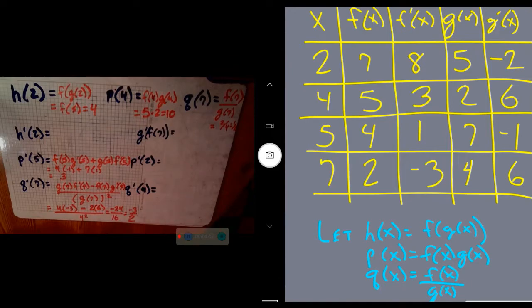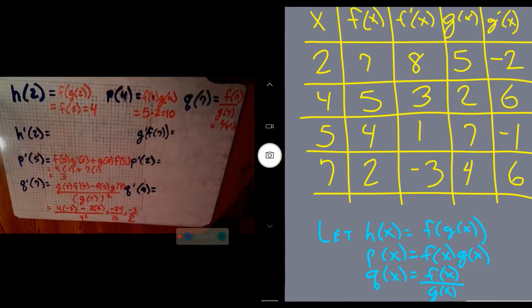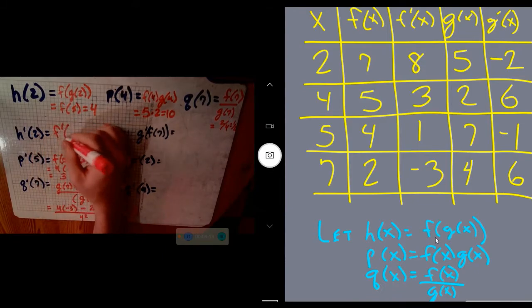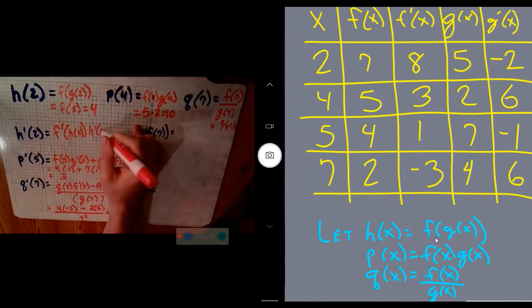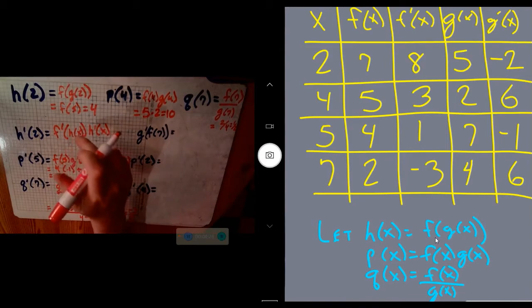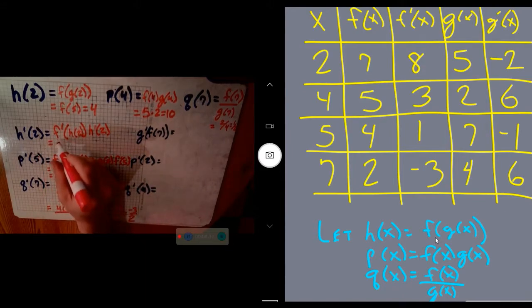Now, the only tough one here—and I say that tough very generously—is with this chain rule. H(x) is an inside and outside function. So it's derivative of the outside with respect to the inside, meaning keep the inside the same, times derivative of the inside. Again, because we are evaluating at a point, I can call it at 2 for each one of those.